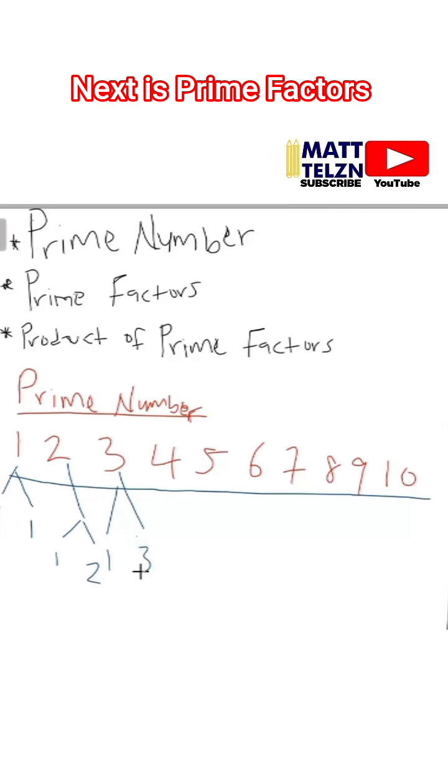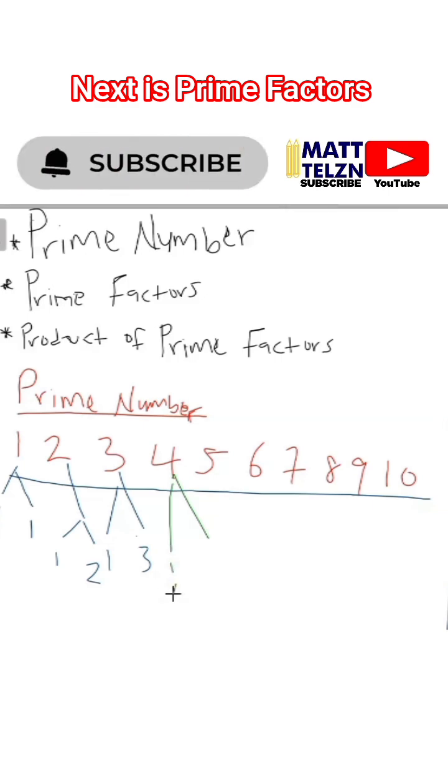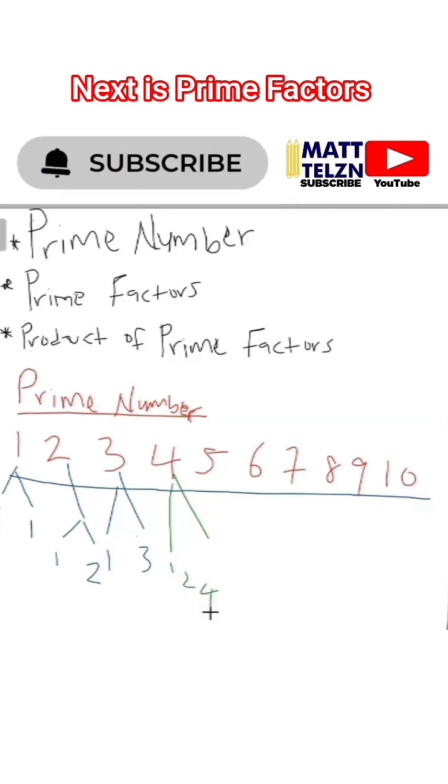Coming to four, when you look at four, the factors of four are what? We have one, we have two, and we have four. These are the factors of four that we have.